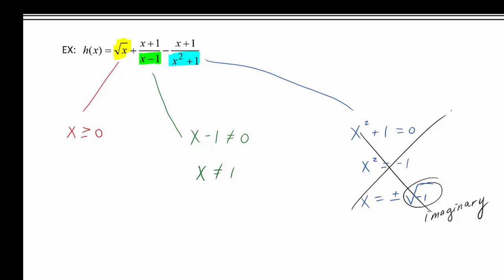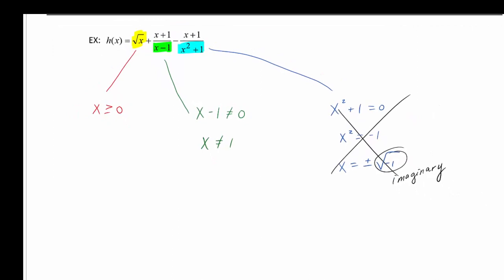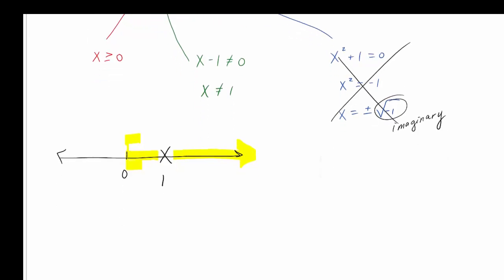So basically, x has to be greater than or equal to zero, and x cannot be equal to one. I think it's helpful to put this type of stuff on a number line. Both of these things have to be true. So x can't be equal to one, and x has to be greater than or equal to zero.